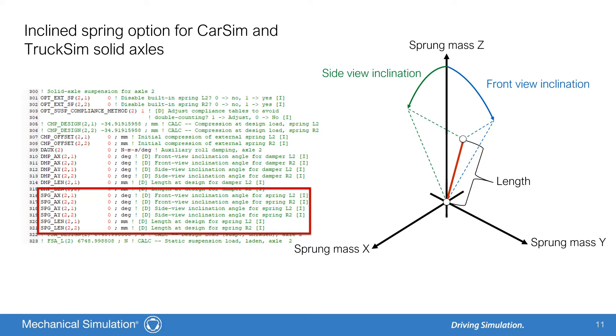Also introduced for 2020.1, for both CarSim and TruckSim, is a solid axle spring option which supports geometric parameters for the spring installations. Spring length, front view spring inclination angle, and side view spring inclination angle. This is an optional feature enabled by setting the spring length parameter to be greater than zero. This is similar to the optional geometric parameters for the solid axle damper installations.